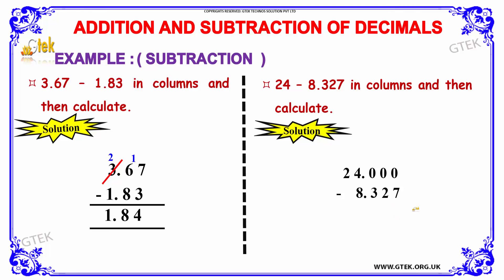When we subtract, since 0 cannot be directly subtracted from 7, we borrow. When we borrow, 4 becomes 3 and we get 9, 9, and 1. Now subtracting: 10 minus 7 is 3; 9 minus 2 is 7; 9 minus 3 is 6.